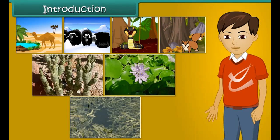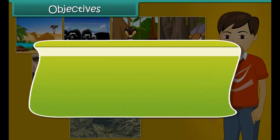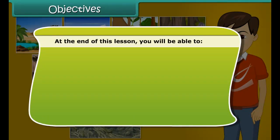All plants and animals develop different features that help them to survive in their surroundings. Let us learn more about living organisms and their surroundings. At the end of this lesson, you will be able to identify the characteristics of living organisms and describe the characteristic features of plants and animals.